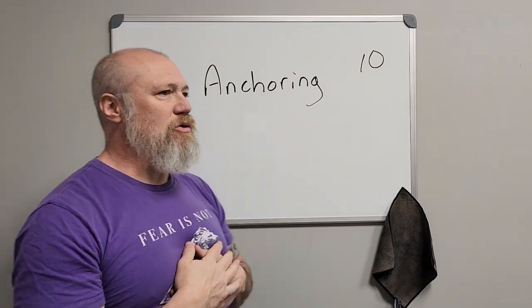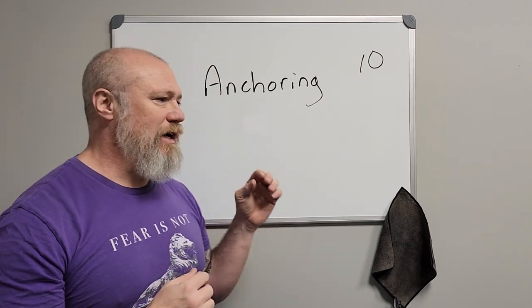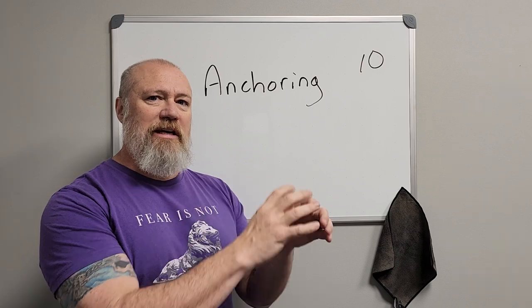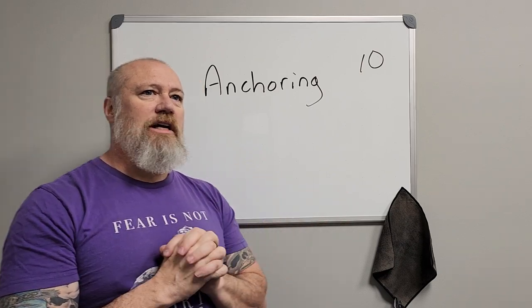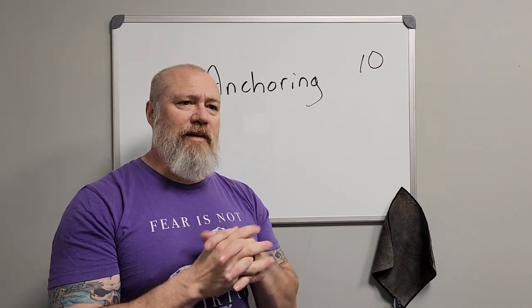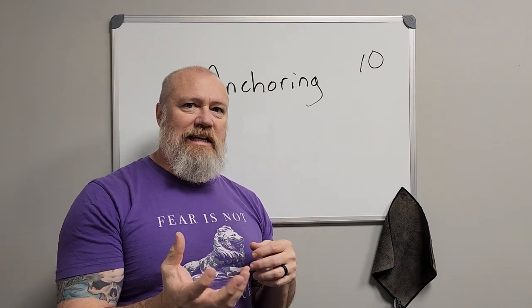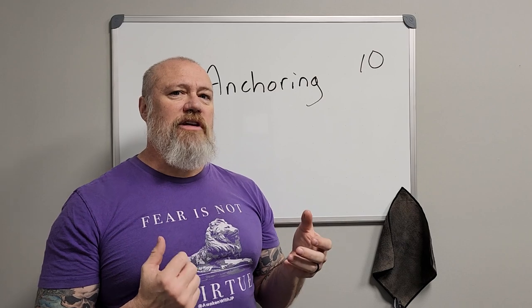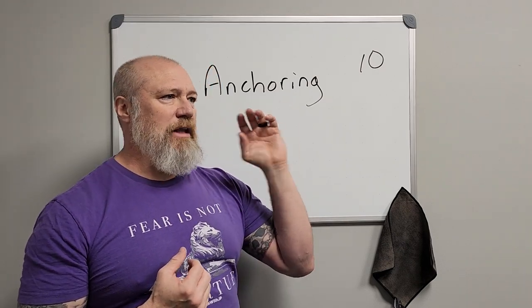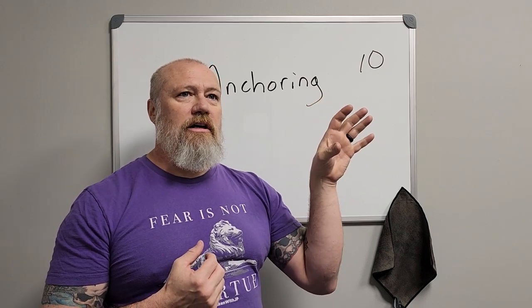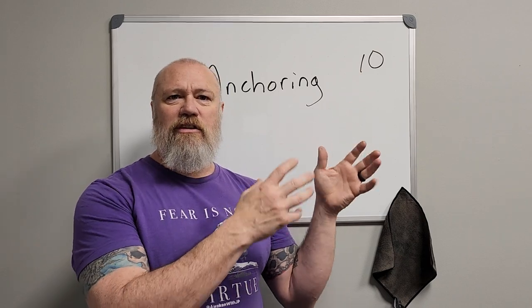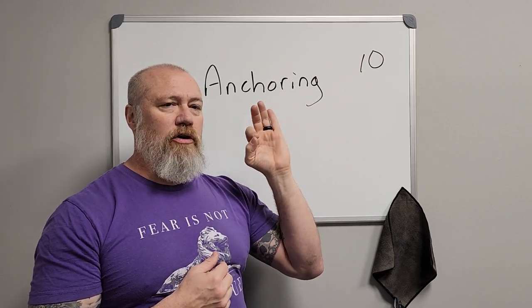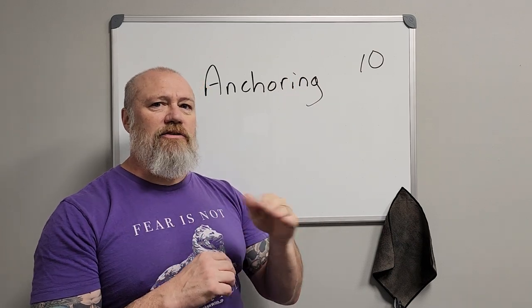The anchoring bias is commonly used in retail. It's when you associate subsequent information with the first bit of information you receive in a set. For example, if I want to sell you something for fifty dollars and you have two items — one at fifty and one at ten — you'd likely buy the ten dollar one. But if I first present a platinum model at $199, then a mid-range option at only $50, you're probably going to go with the fifty dollar one.